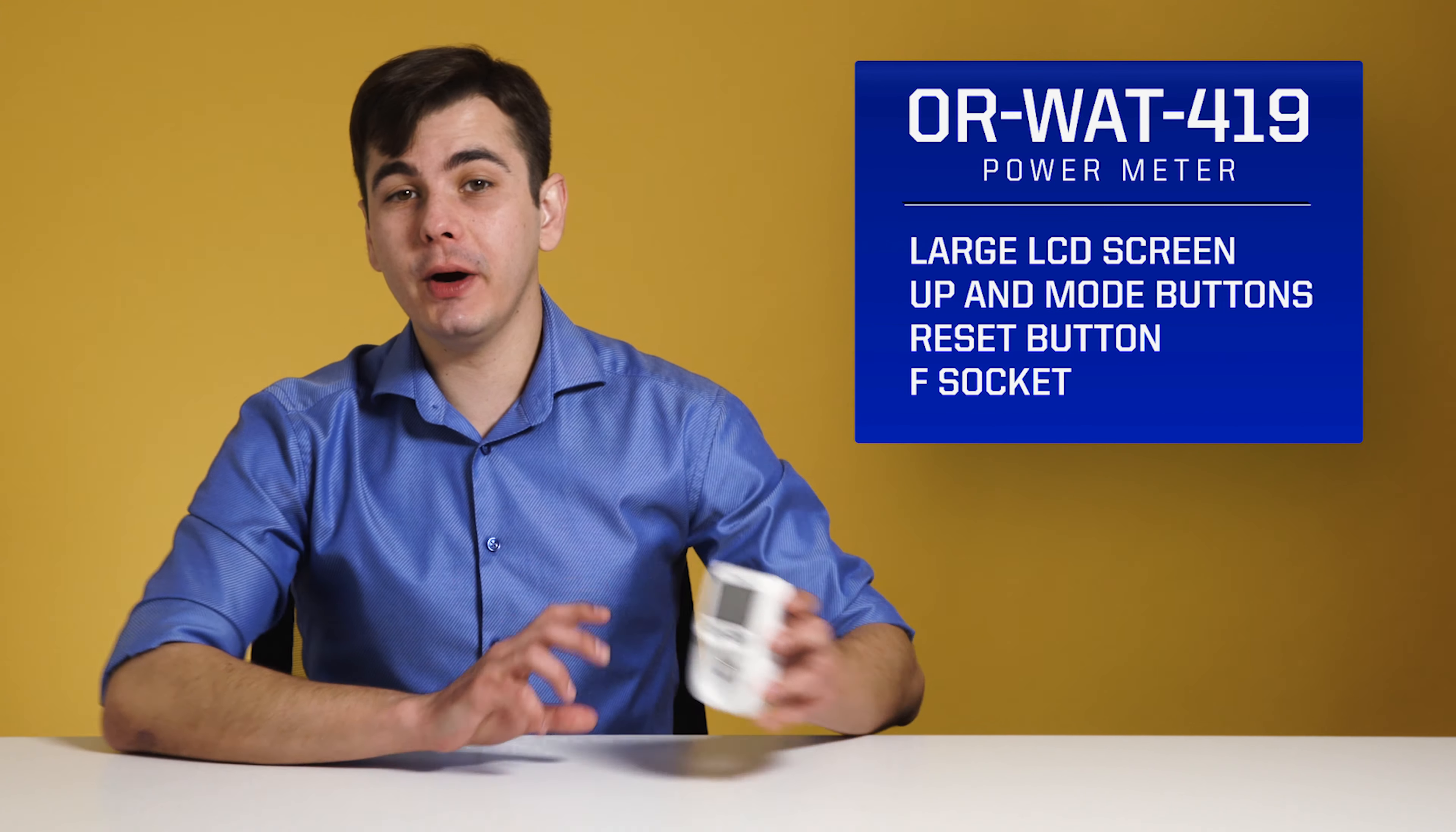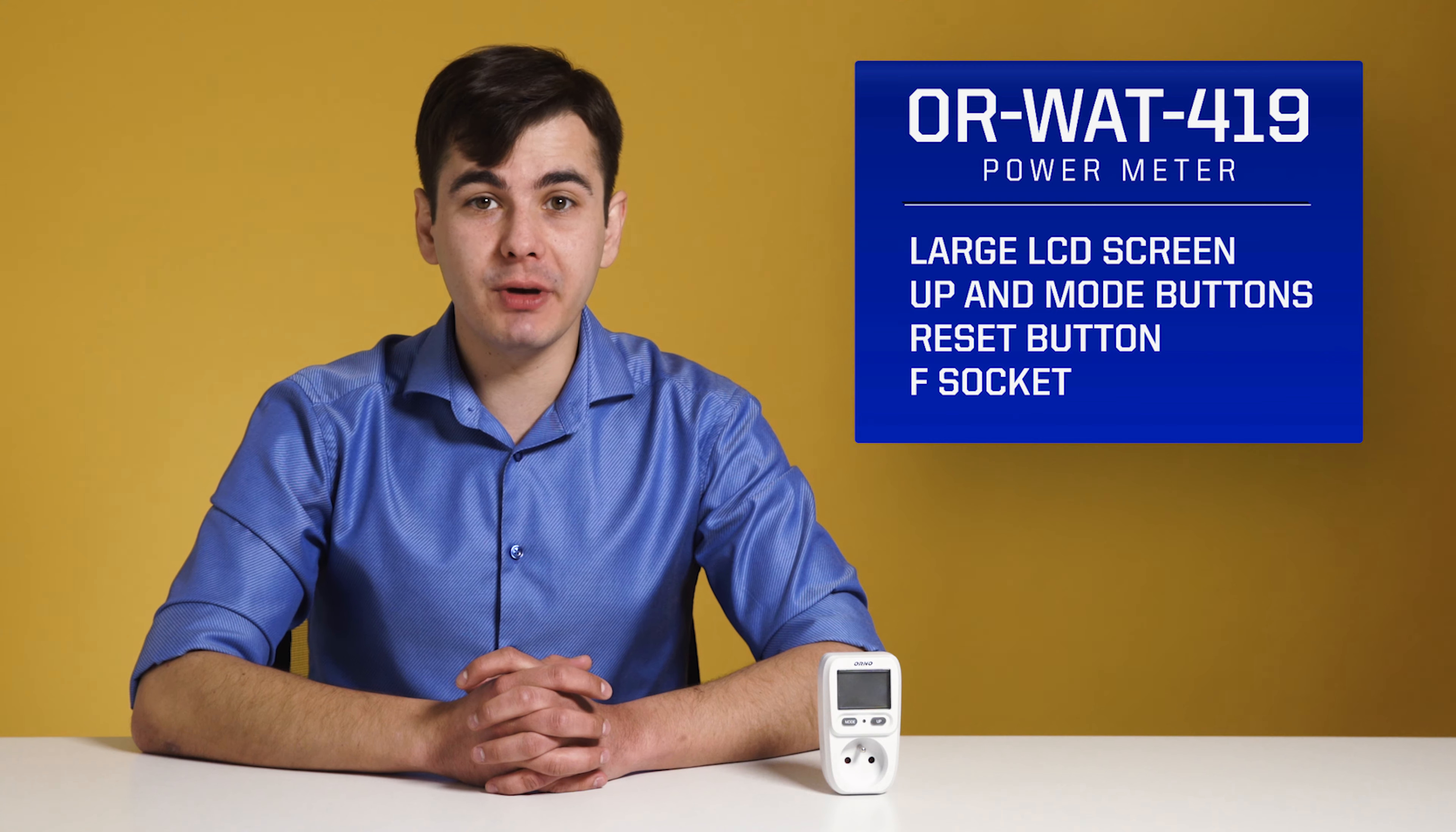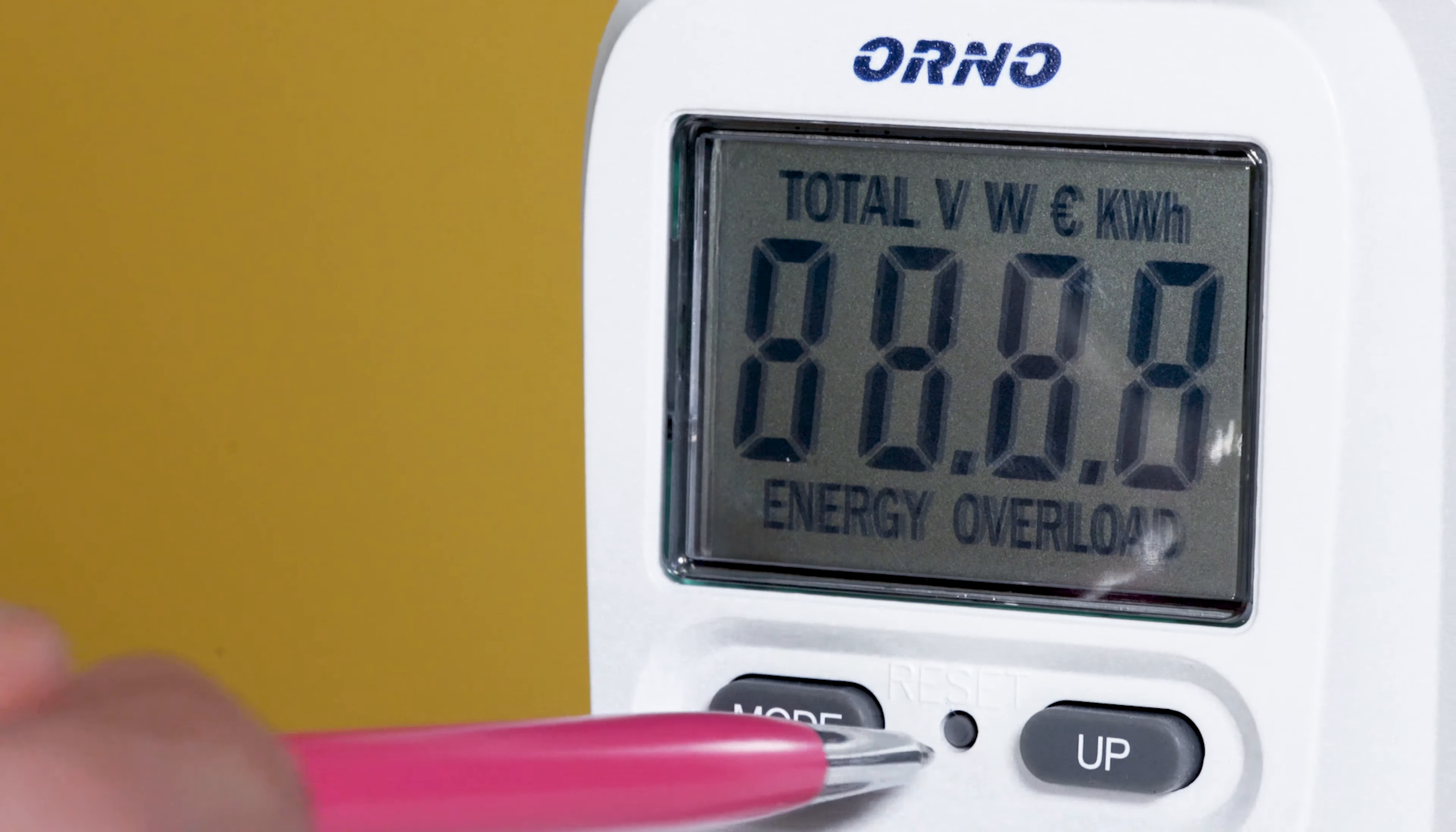This model is the ORWAT 419 from ORNO. It has one LCD screen, two buttons—mode and up—with which you can switch between measurements and enter the price per kilowatt-hour in euros. The reset button is for full reset and you need something like a pen to access it. This version has a French type socket and plug. At the front, we can see a ground pin.